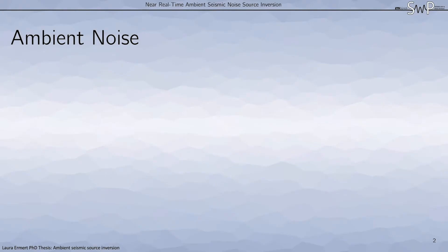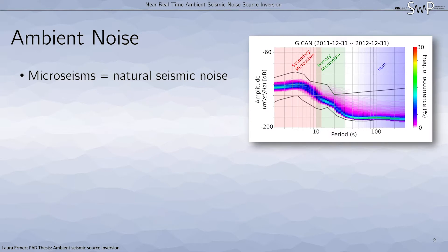Natural ambient seismic noise is also known as microseisms. Depending on what frequency range you look at, these have different names, namely the primary and the secondary microseisms. The primary microseisms are at lower frequencies, roughly between 0.05 to 0.1 Hz, whereas the secondary microseisms are usually between 0.1 and 0.2 Hz.